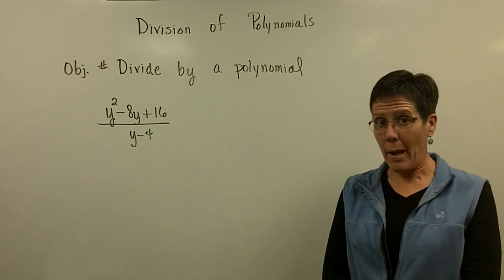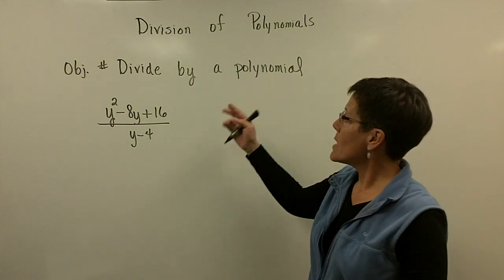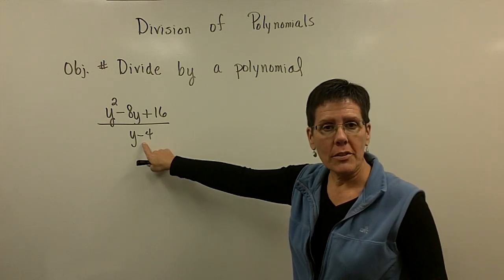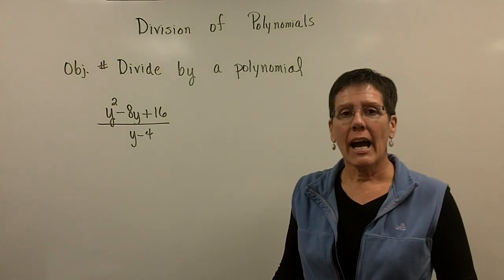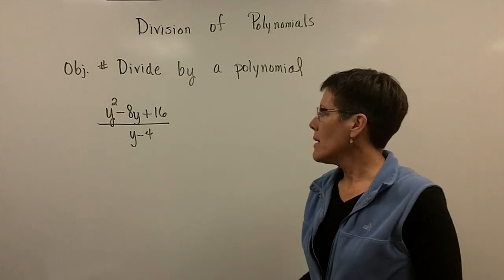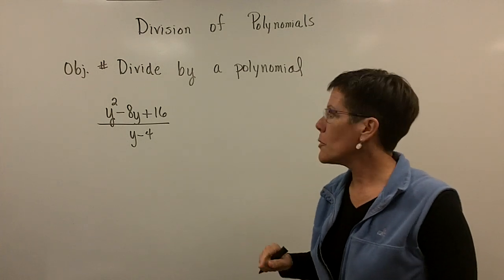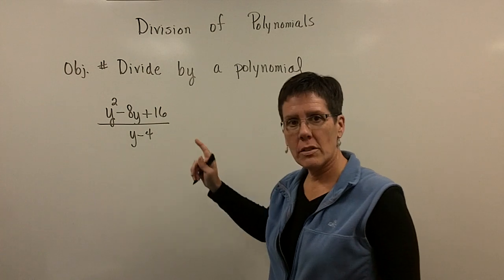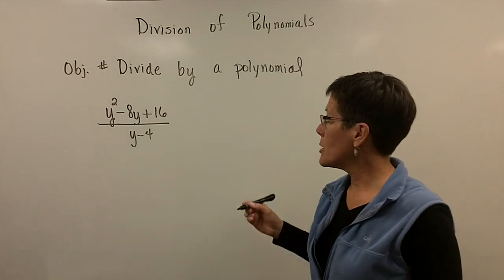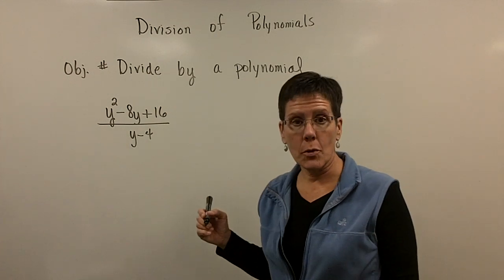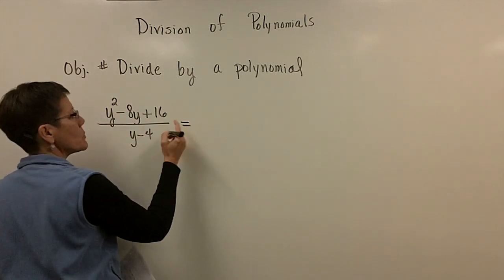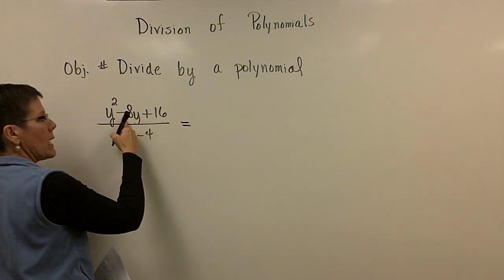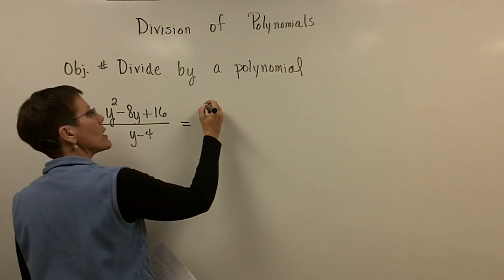Let's continue. Let's divide a polynomial by a polynomial. I have this binomial here. Before we actually do this problem by the methods that I'd like to share with you, I'd like to remind you of the fact, especially if you've seen this before, that this trinomial is factorable in the numerator. It can be factored into y minus 4 times y minus 4 because the two numbers whose product is a positive 16 and adds to be a negative 8 are both negative 4s.